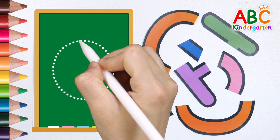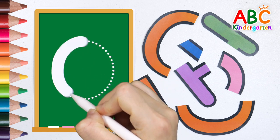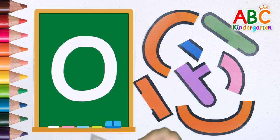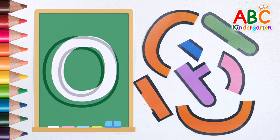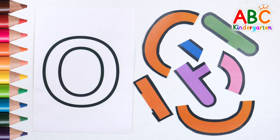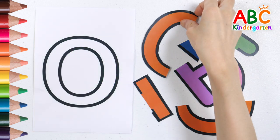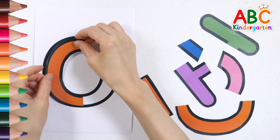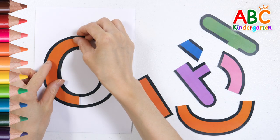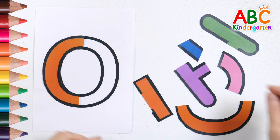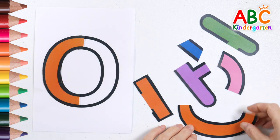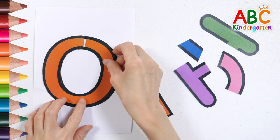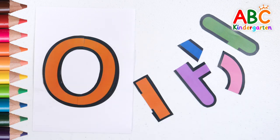Shall we write an O along the dotted line? O. Let's put the puzzle pieces together to make the letter O. O.